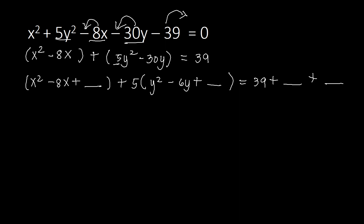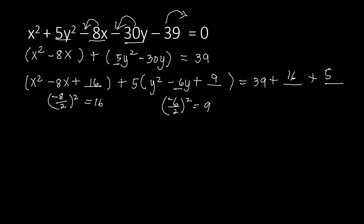To find the completing values: for the x group, the coefficient of x is negative 8. Dividing by 2 gives negative 4, squaring gives 16. So we add 16 to the x group, and since there is no outside coefficient, we also add 16 on the right side. For the y group inside the parenthesis, the coefficient of y is negative 6. Dividing by 2 gives negative 3, squaring gives 9. So we add 9 inside the y group. But on the right side, we multiply 5 by 9 and add 45, because 5 is the number we factored out.